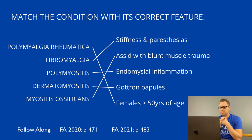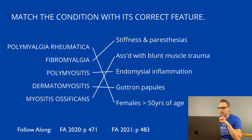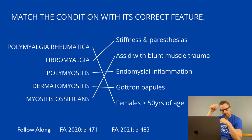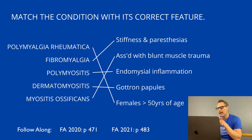Next up is polymyositis and dermatomyositis. Non-specific lab findings include increased CK and positive antinuclear antibodies, while specific findings include a positive anti-JO1, anti-SRP, and anti-MI2 antibodies. Polymyositis is characterized by progressive proximal muscle weakness due to endomysial inflammation with CD8 T-cells, most likely in the shoulders — think activities like combing hair, brushing teeth, putting away dishes. Dermatomyositis is clinically similar but also includes Gottron's papules, facial erythema in a photodistributed manner, and darkening and thickening of the fingertips and sides, resulting in irregular appearing marks.